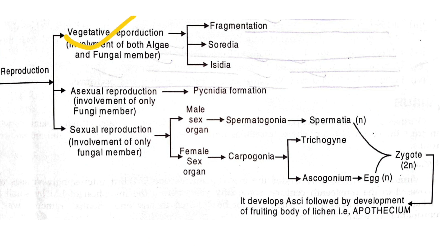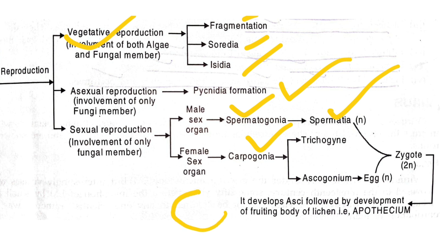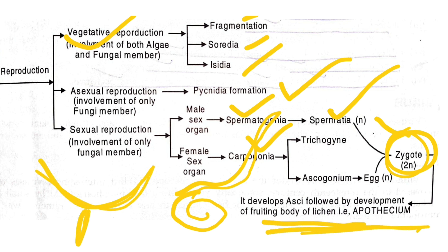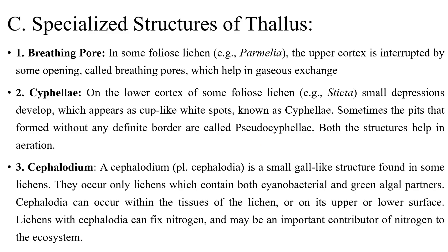Reproduction: vegetative reproduction occurs by fragmentation, soredia, and isidia; asexual reproduction by pycnidia formation; and sexual reproduction where the male sex organ is the spermatogonium and the female sex organ is the carpogonium. The carpogonium has an ascogonium (coiled part) and a trichogyne (elongated part). Both fuse to form a diploid zygote, from which a fruiting body (apothecium) develops, containing asci and ascospores. These ascospores germinate to form a new thallus by attaching with a suitable algal partner.